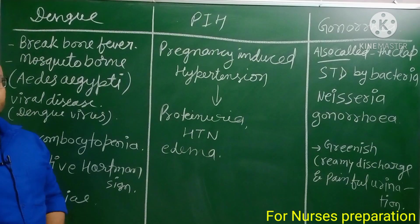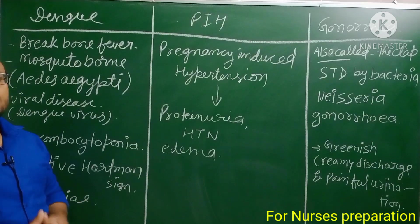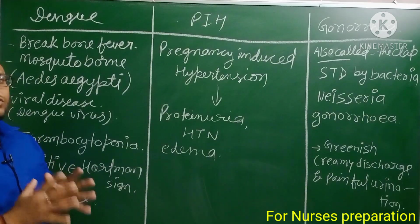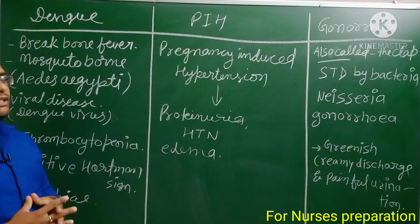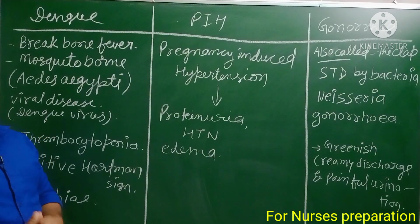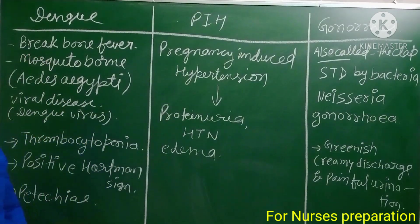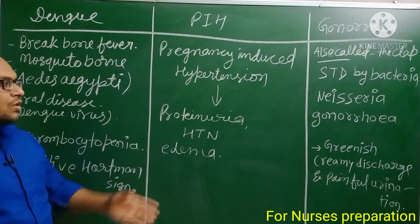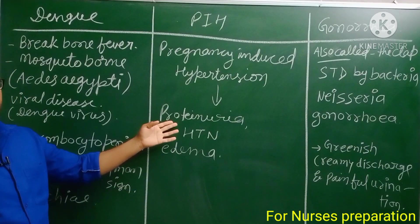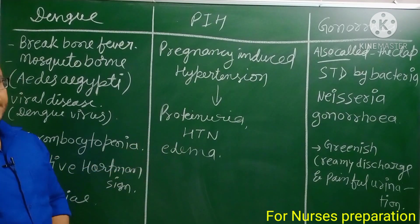The next disease is PIH, or Pregnancy-Induced Hypertension. In a woman who previously had no hypertension, hypertension suddenly develops during pregnancy. The important features of this condition are proteinuria (presence of protein in urine), hypertension, and edema.